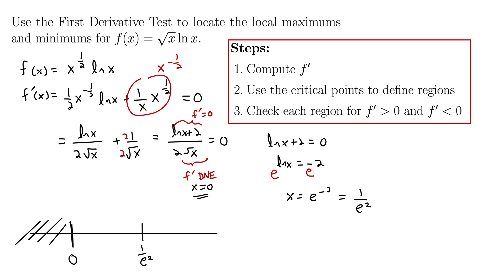We need test points in each region. Remember, e is about 2.71, so 1/e² is some decimal less than one. Our point to the right can be x = 1. Now we need a point between 0 and 1/e² — I'll pick 1/e³, which is indeed between 0 and 1/e². So now let's test our points. We evaluate f ′(x) = (natural log x + 2) over 2 rad x and just need to know if it's positive or negative in each region.